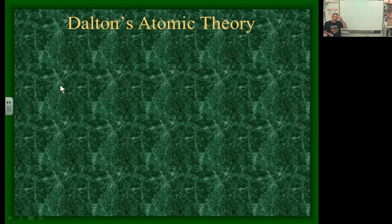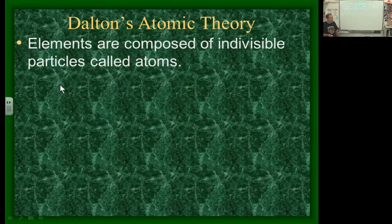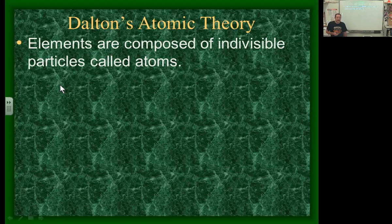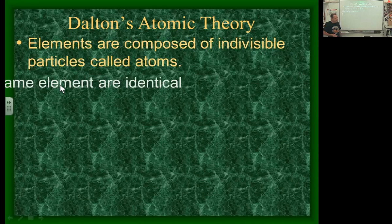Dalton came up with his atomic theory. Remember, this was back in the 1800s — the equipment wasn't as advanced as what we have today, and electricity hadn't even been invented yet. So considering what he had to work with, he did pretty good. Dalton's first concept: elements are composed of indivisible particles called atoms. He believed atoms could not be broken apart. Now, we know this is no longer true — we have atom smashers or particle accelerators that can slam particles into atoms and break them apart. But back then, this was a fair assumption.